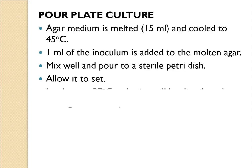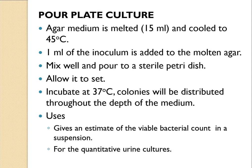Next is pour plate culture. Solid agar medium is melted and cooled to 45°C, and one ml of inoculum is added into the molten agar. These are mixed well and poured into a sterile petri plate, allowed to settle, then incubated at 37°C. The colonies will be distributed throughout the depth of the medium.